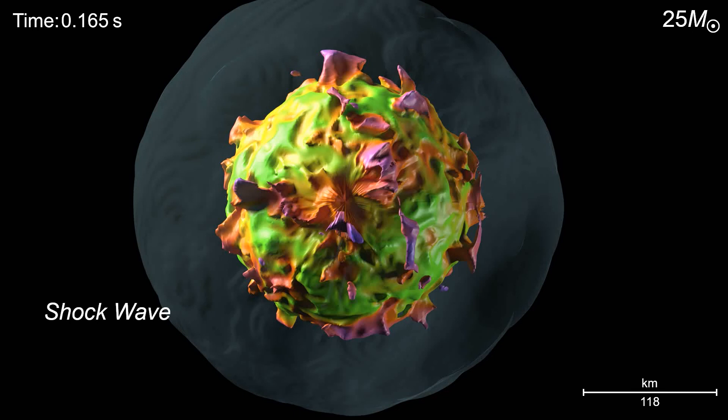The material behind the shock becomes unstable to violent, overturning turbulence due to the neutrino emissions that, as they pulse out, heat the material.